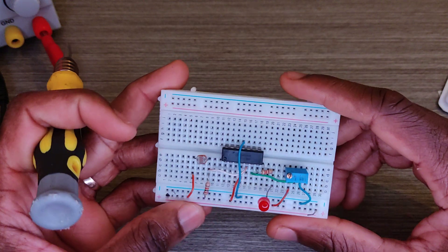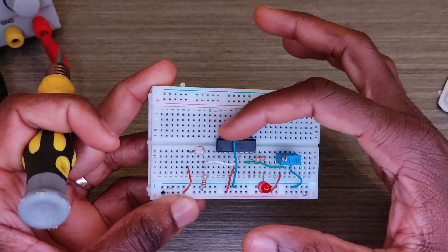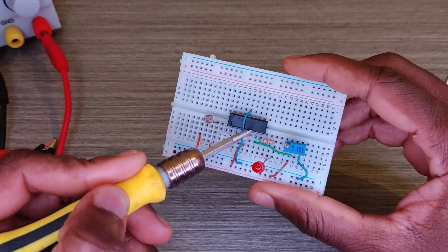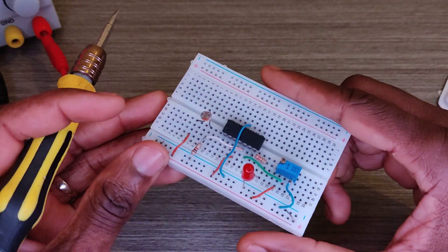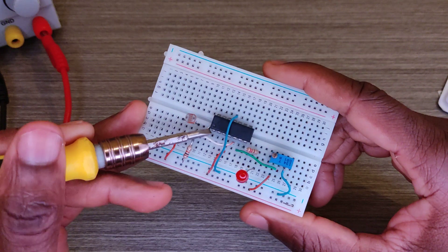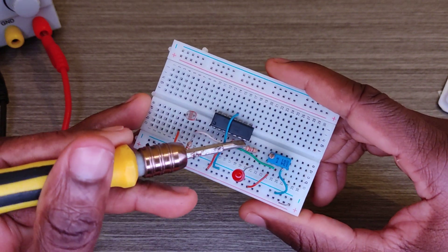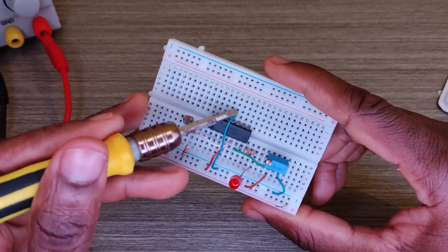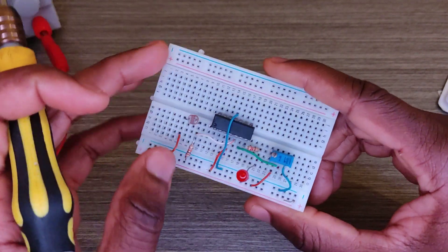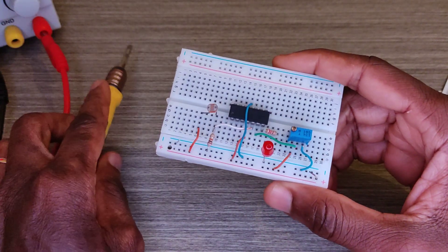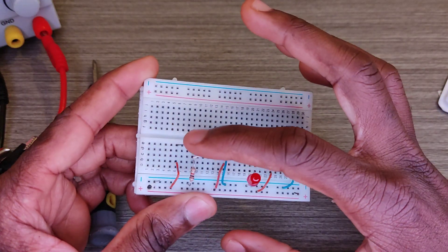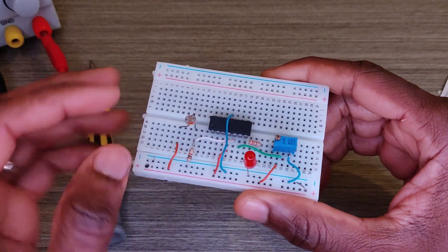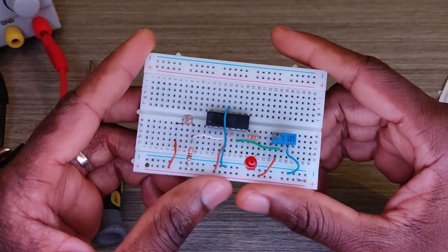On this side there are seven pins and on this side also seven pins. Pin one is here, pin one through pin seven. Pin eight from pin 14. The LDR is connected to the VCC through this wire.